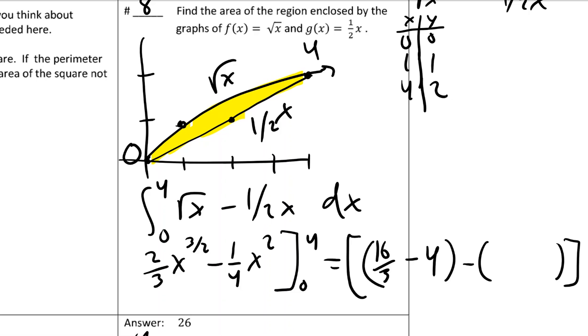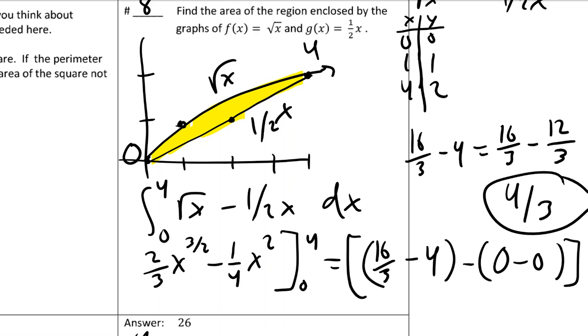Sixteen divided by four would be four. Then you got to plug in zero, but zero obviously is a little bit easier to compute. So we end up with sixteen-thirds minus four, and you get a common denominator. Looks like we end up with four-thirds, which is one of our choices.